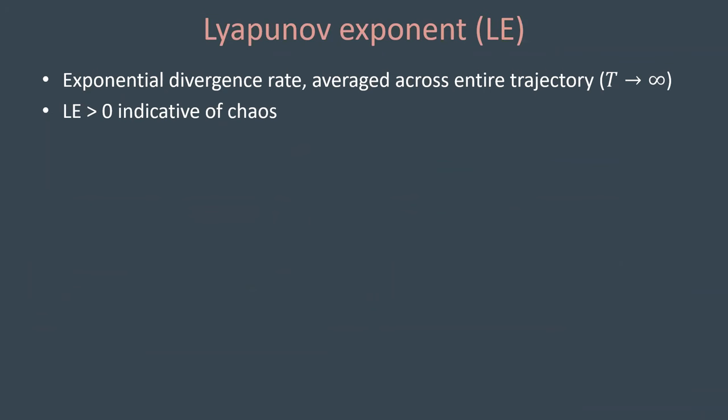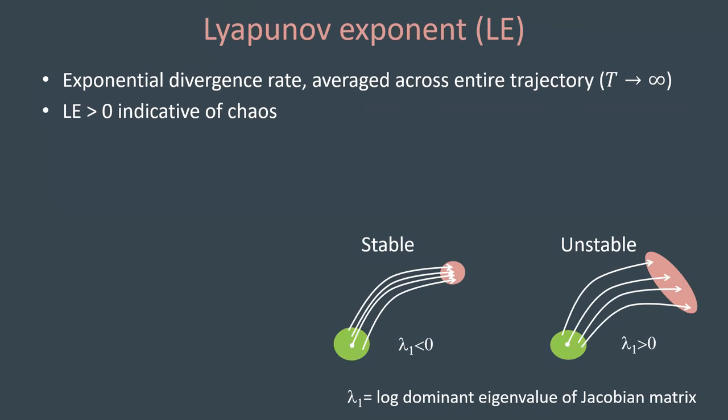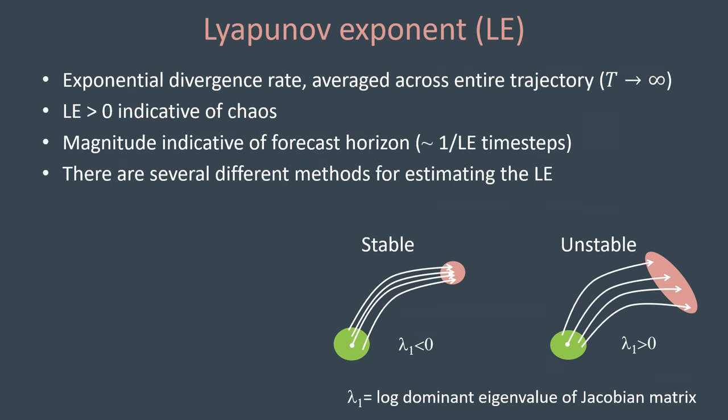Many of these methods attempt to estimate a quantity called the Lyapunov exponent — specifically the dominant Lyapunov exponent, which I'll call the LE — which is the exponential divergence rate of trajectories averaged across an entire trajectory, with positive values being indicative of chaos. Much as the Jacobian matrix tells you whether trajectories will diverge or converge depending on whether the log-dominant eigenvalue is positive or negative, the Lyapunov exponent expresses that this is true across the whole trajectory, thus capturing sensitivity to initial conditions. When the LE is positive, its magnitude is indicative of the forecast horizon, which is about equal to its inverse, and there are several different methods that exist for estimating the LE.